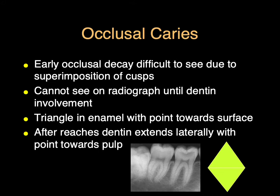Occlusal decay runs differently because the triangle starts at the point within a pit or fissure and extends laterally as it reaches towards the dental enamel junction. Once it hits the DEJ, it runs laterally again. Often we don't see that enamel triangle very well, but once it hits the dentin, it extends laterally. It's hard to see occlusal decay on a radiograph until it's very deep, so by the time we see significant occlusal decay on a periapical or bite-wing, there's a good chance it could be into the pulp tissue.